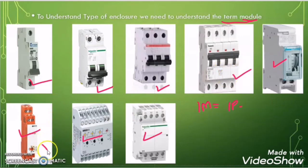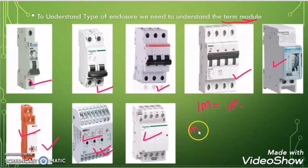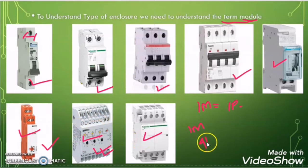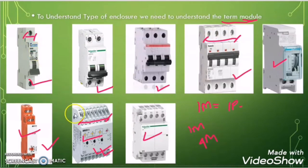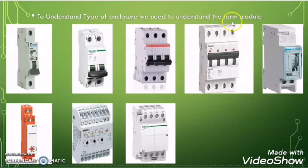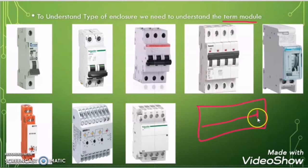In our example, one UV relay is considered as one module because it takes the same space as a single pole MCB. But another UV relay can be considered as four modules because it takes the same space as a four pole MCB or four single pole MCBs. So if someone says a panel of 16 modules, you can imagine that panel has space to install 16 single pole MCBs.